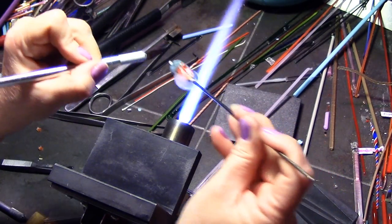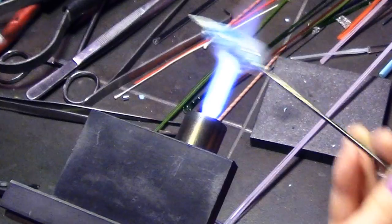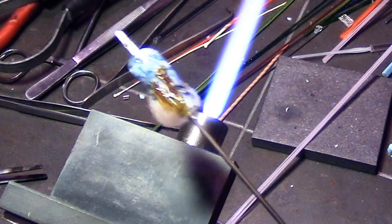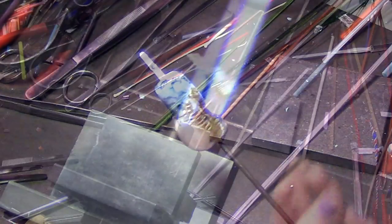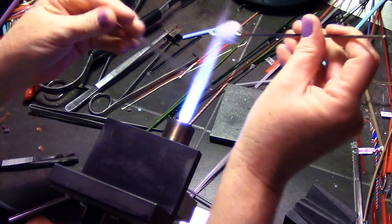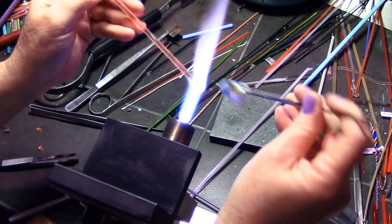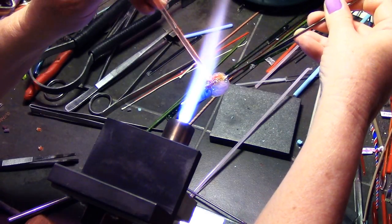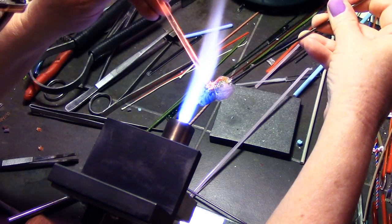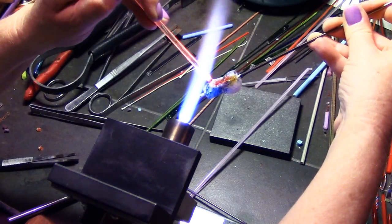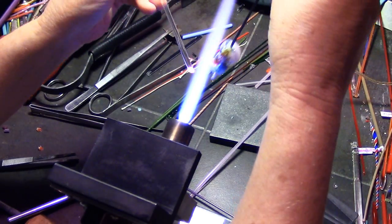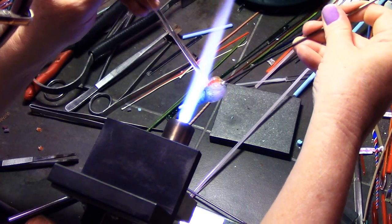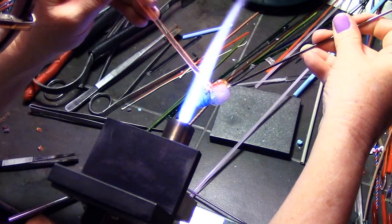After these are done, I'm going to encase them. Every time you add an element you want to make sure it's encased before you go to the next section. Now I'm going to encase these two. Make sure you keep the rest of the bead warm, and I'm just going from the bottom up to the top covering that whole line of seaweed.